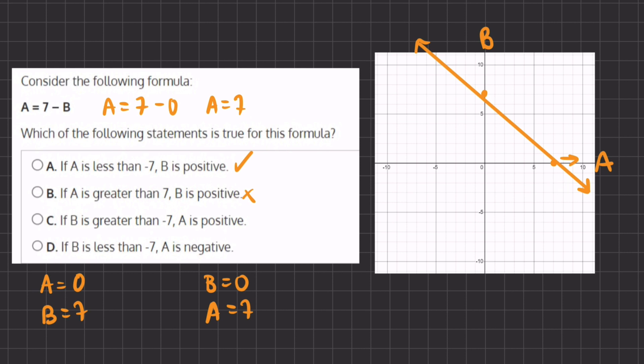All right, now let's move on to C. If B is greater than negative 7, negative 7 is right over here. Well, if B is greater than negative 7, A is positive. Now we see over here that if B is greater than negative 7, A can be in the negative realm of the graph over here, and also in the positive realm of the graph, all of here.